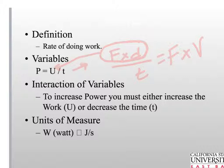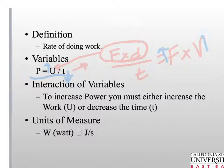Looking at the interaction of these variables: if you increase power, you must either increase work or decrease the time in which you do that work. Or if you look at force times velocity, you either increase the force or increase the velocity. The units of measurement are the watt, and that's a joule over a second.